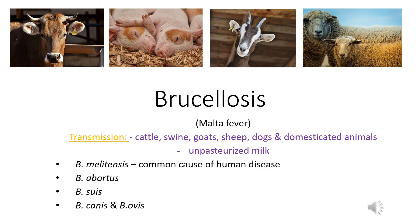Brucellosis is a zoonotic disease and can be called by many different names. Some of these names include Malta fever, Bang's disease, Mediterranean fever, or rock fever. As an interesting fact, Malta fever comes from where the fever was initially described, according to the geographic endemic region.